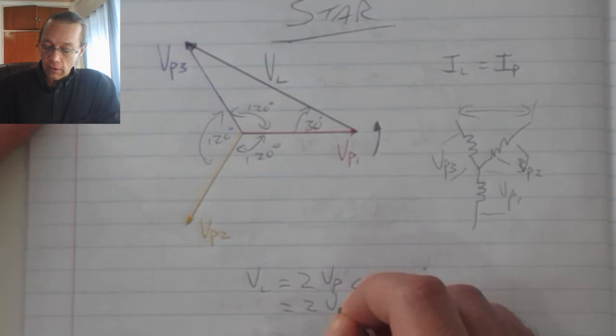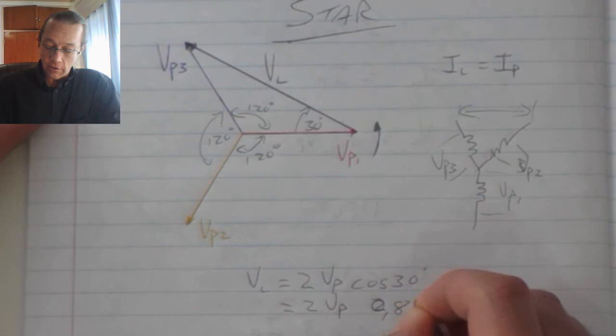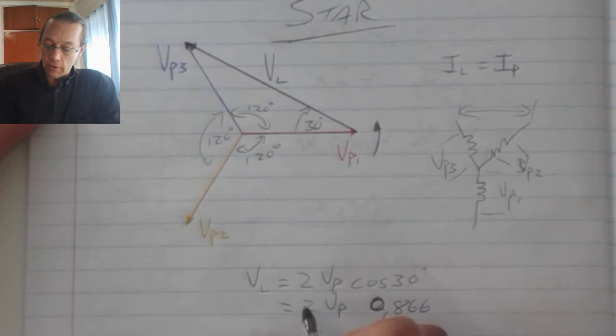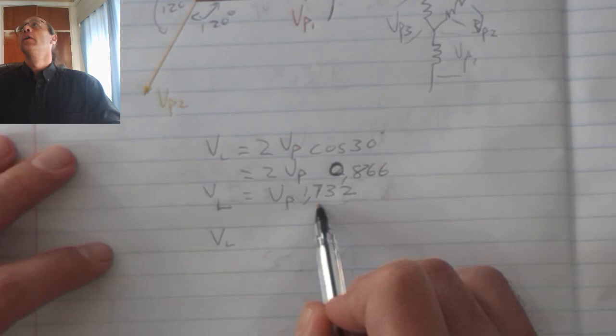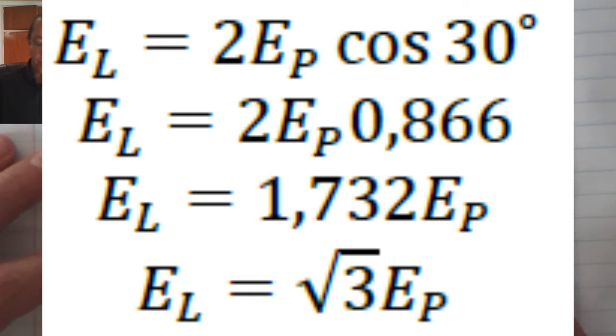Now when I calculate cos 30, I find it is equal to 0.866, I'm rounding up. If I multiply 0.866 by 2, then I get 1.732, and if I square that value, then I find that it is equal to 3.